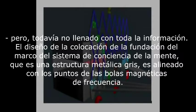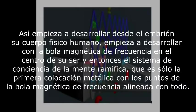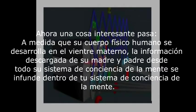The foundation placement framework design of the mind consciousness system, which is a metallic grey structure, is aligned with magnetic frequency dot balls — the exact same magnetic frequency ball within which your essence is placed. As you start developing from the embryo, your human physical body develops with the magnetic frequency ball in the center of your being, and then the mind consciousness system branch, which is at first just a metallic placement, with the magnetic frequency dot balls aligned all over. It is not yet filled with any information.